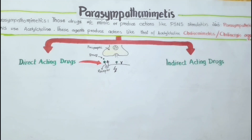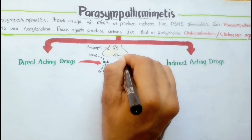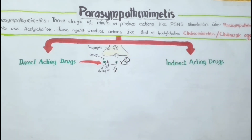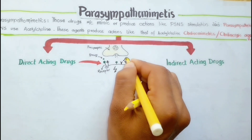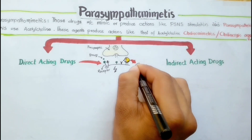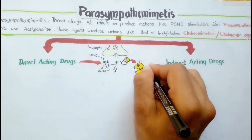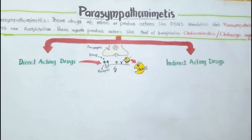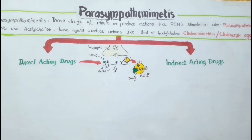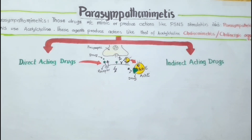On the other hand, the indirect acting drugs do not interact with cholinergic receptors directly. Instead, they protect acetylcholine from the enzyme acetylcholinesterase, which causes degradation of acetylcholine readily after release. By inhibiting this enzyme, the acetylcholine concentration rises in the synaptic cleft and stimulates the receptors for a longer period of time.